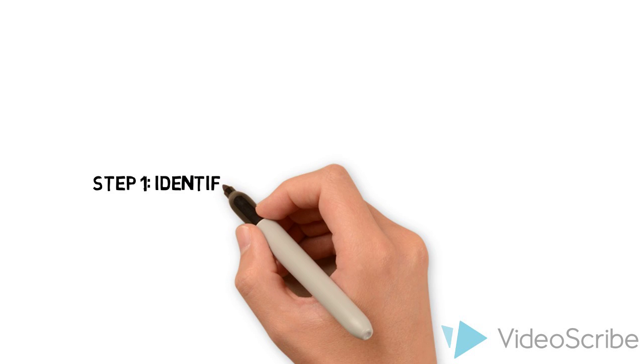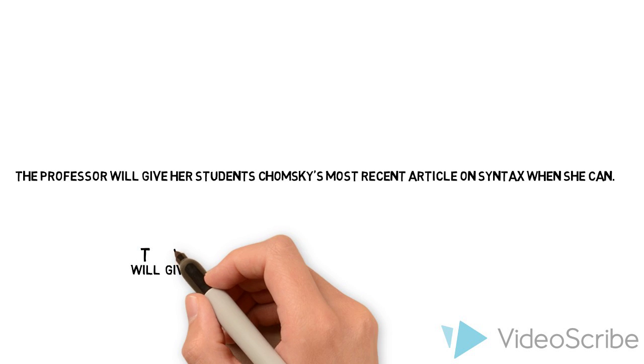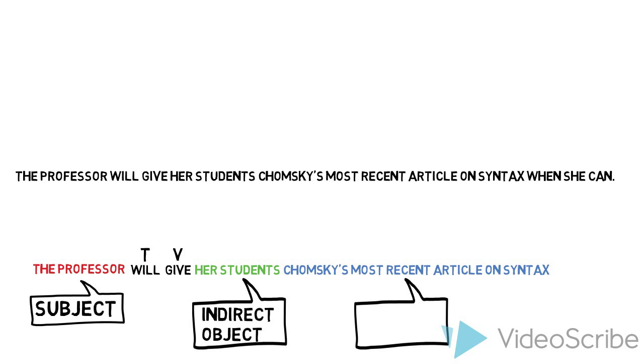The first step will be to identify the main verb and its arguments. The main verb in the sentence is the verb give. The professor is the subject. Her students is the indirect object. Chomsky's most recent article on syntax is the direct object and when she can is an adjunct.